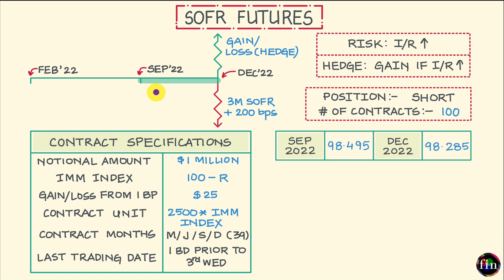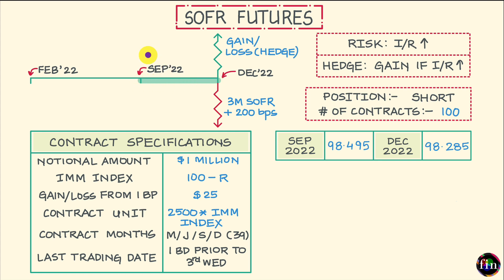If you've observed this carefully, the example we've constructed is such that the borrowing period for my $100 million borrowing exactly coincides with the period underpinning the September 2022 three-month SOFR futures contract. Both for my loan and for my hedge, it's the same interest period — starting on the third Wednesday of September 2022 and finishing on the third Wednesday of December 2022.